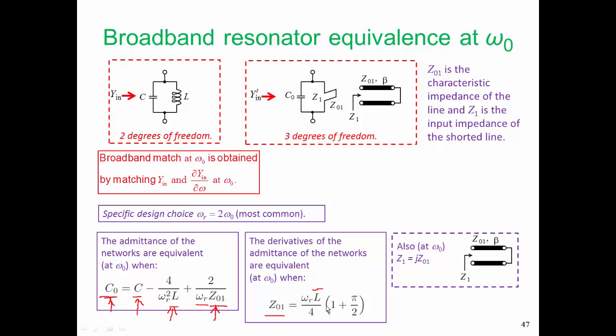Now there's an interesting byproduct by making this choice, that omega r equals 2 omega 0. And that means that Z1, the impedance looking into the shorted stub, is just going to be jZ01. So that is very convenient. So if we have a 50 ohm transmission line which is shorted, and we make the choice that the commensurate frequency is twice our operating frequency, then Z1 is just jZ01. So Z01 is 50 ohms, then Z1 will be j50.